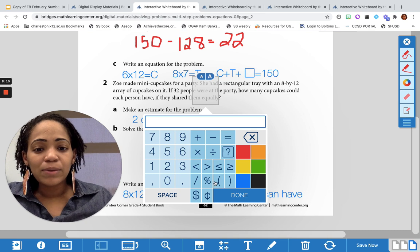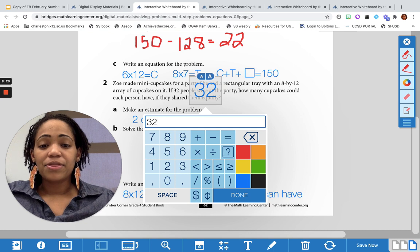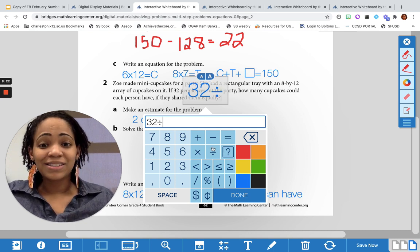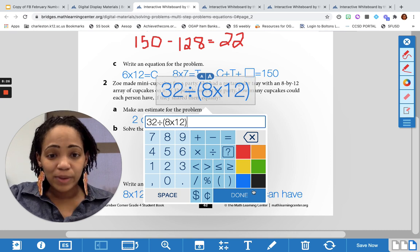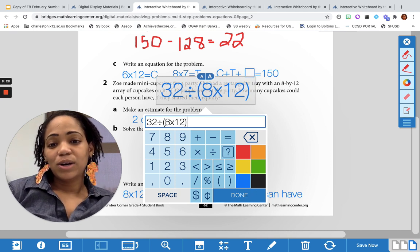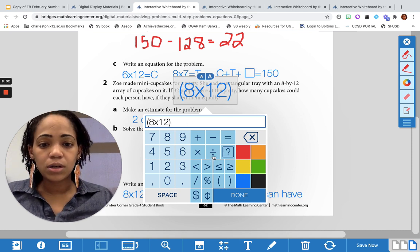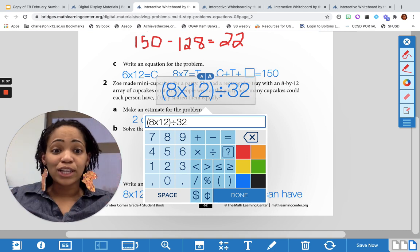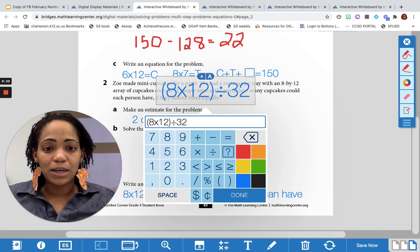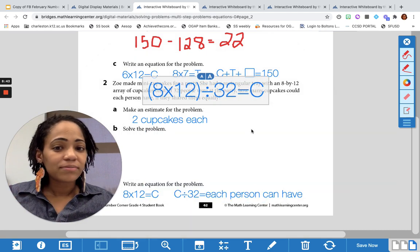Then it would look maybe something like this: 32 divided by 8 times 12. So we know we need to do 8 times 12 first, and I did it backwards again, Miss Tramiel, shame on you. 8 times 12, and then divide that into the 32 people, because remember we talked about having equal groups, and that's going to tell us how many cupcakes they can have.